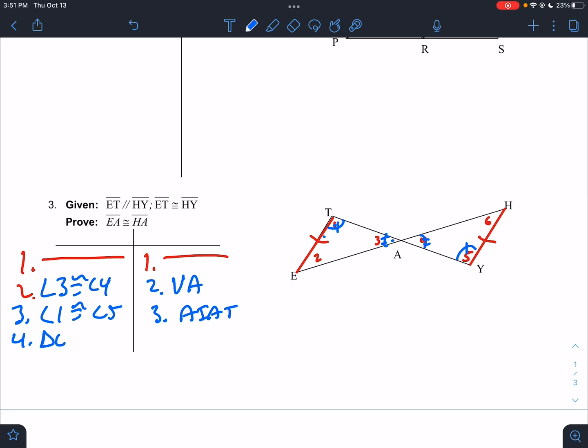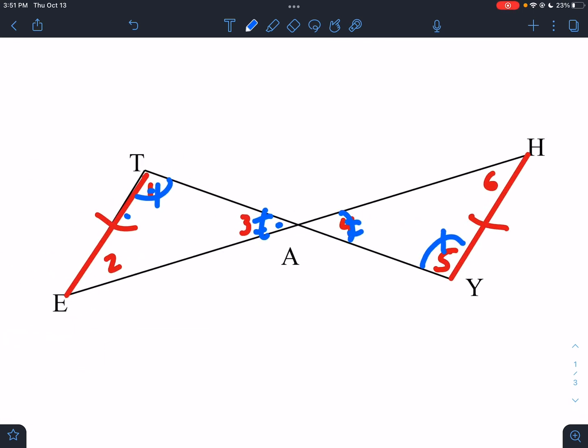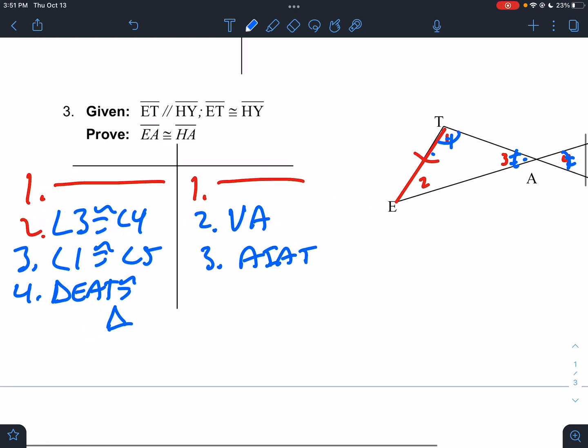And now I have angle, angle, non-included side. So now I can say there's my eat. If I go triangle EAT, it is going to be congruent to triangle, right? That's blank two, one, EAT, blank two, one, HAY. Eat, hey. And we said that's angle, angle, side.